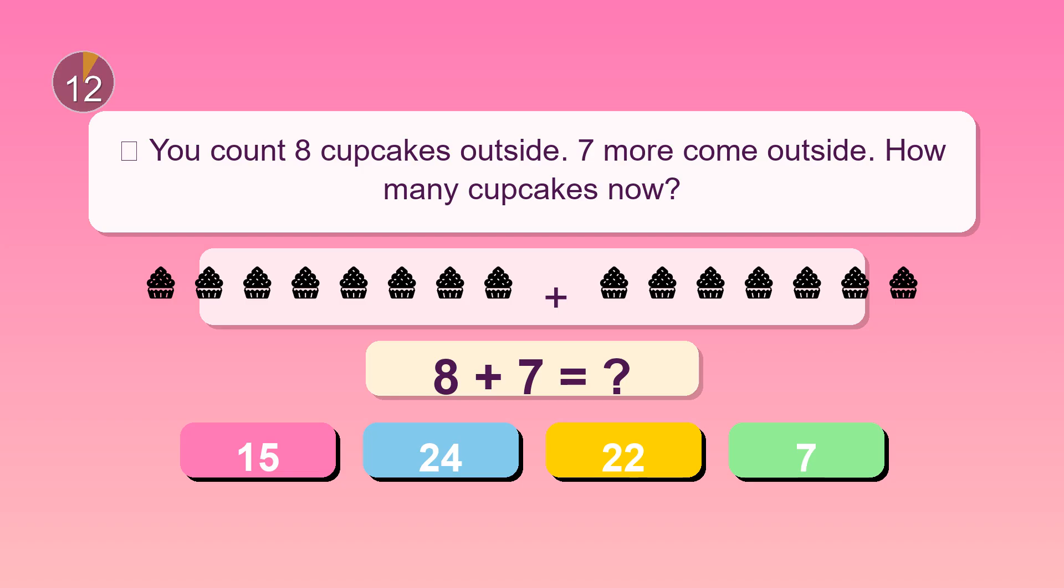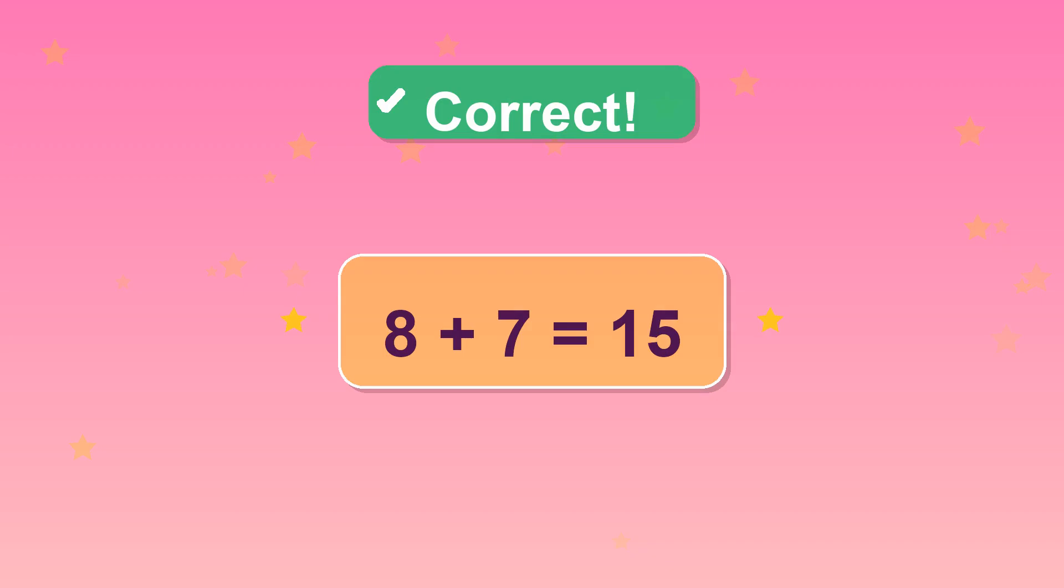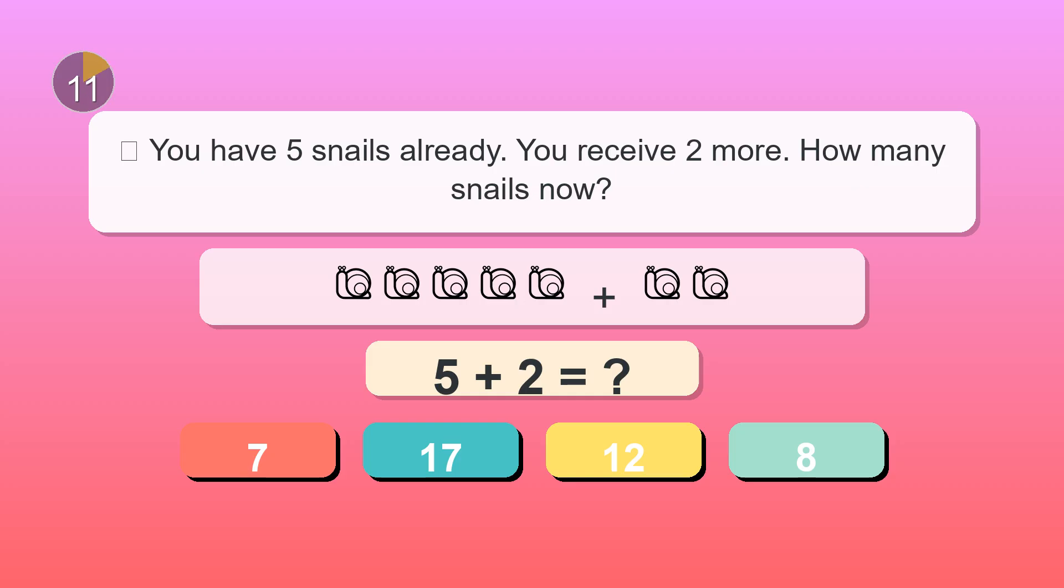You count eight cupcakes outside. Seven more come outside. How many cupcakes now? 15. High five. You have five snails already. You receive two more. How many snails now? Six.